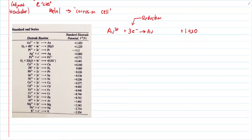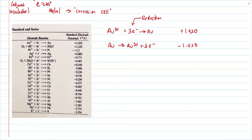Another format writes it as: Au → Au³⁺ + 3e⁻, with electrons on the right-hand side. When you rewrite it this way, you flip the sign — so positive 1.420 becomes negative 1.420. This is very important: if you flip the reaction, you must flip the sign. Some tables have electrons on the left, others on the right depending on the country. The concept remains the same — just flip the signs accordingly.